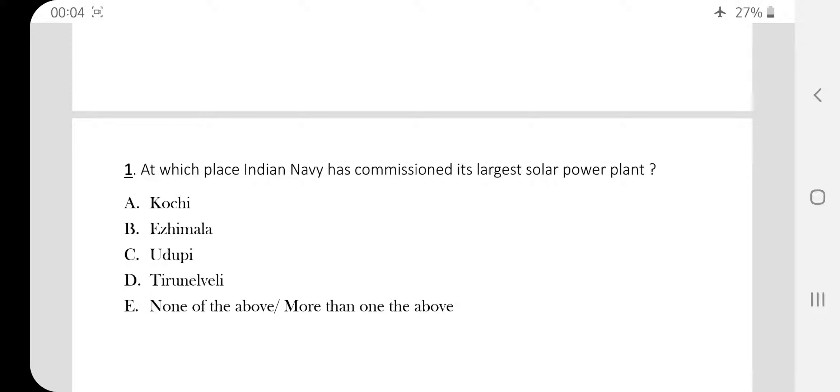At which place Indian Navy has commissioned its largest solar power plant? So the correct answer is option B, A.G. Mala. A.G. Mala is in Kerala.